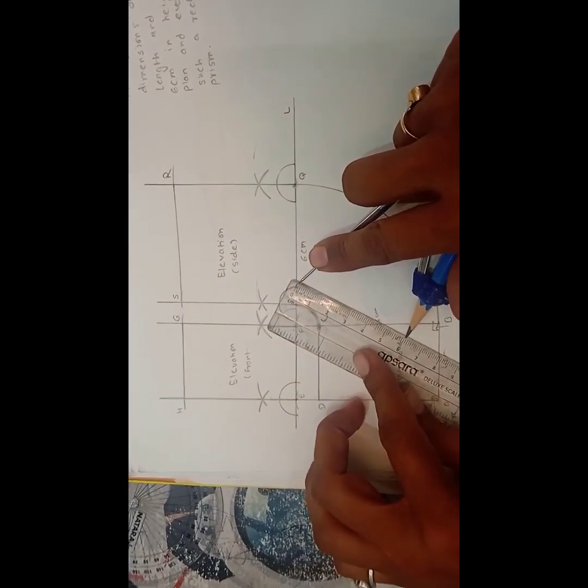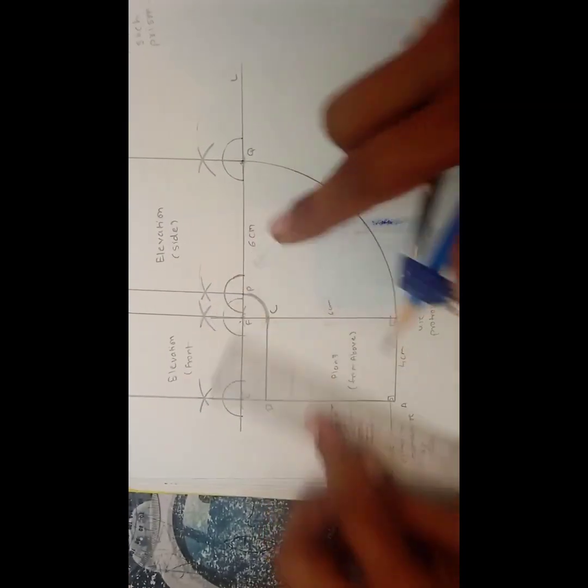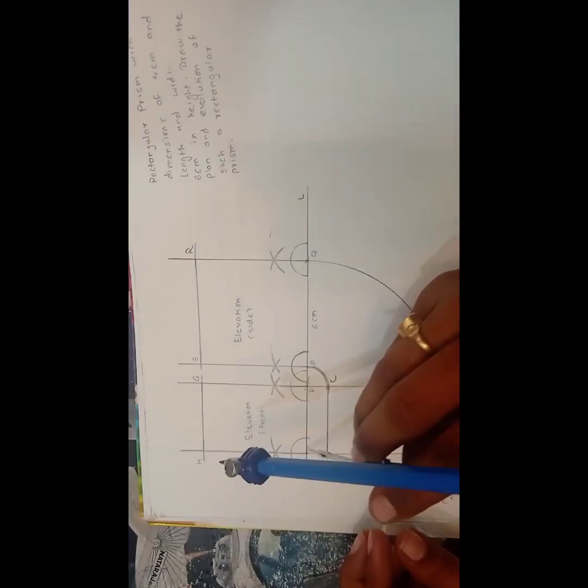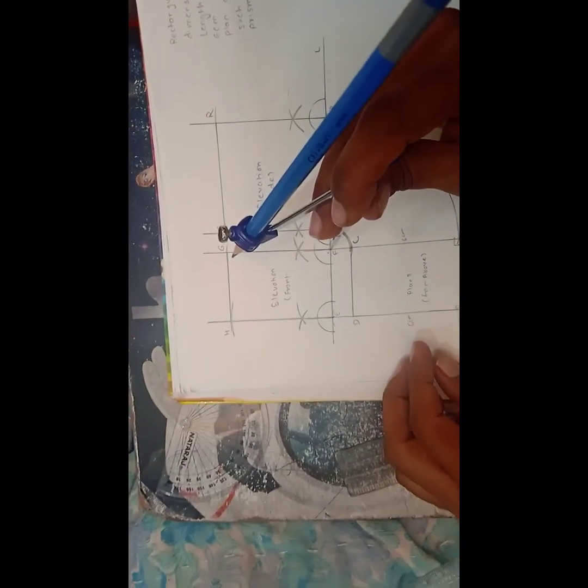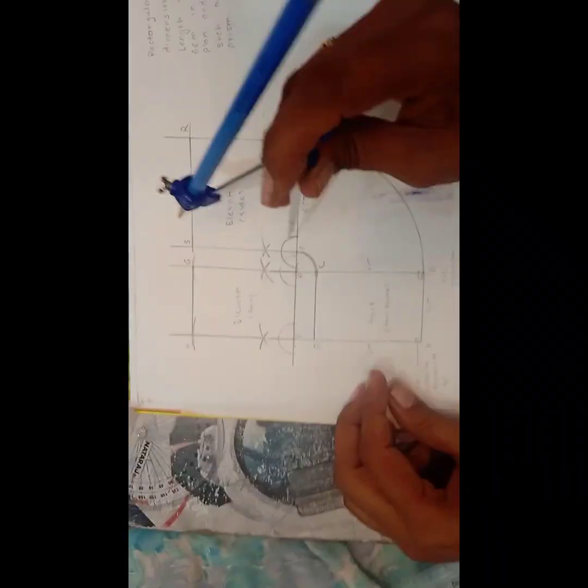Now in your compass take the measurement of the 6 cm. Exactly. This is the measurement of the 6 cm. Now come on the point E and put an arc which we have already drawn.